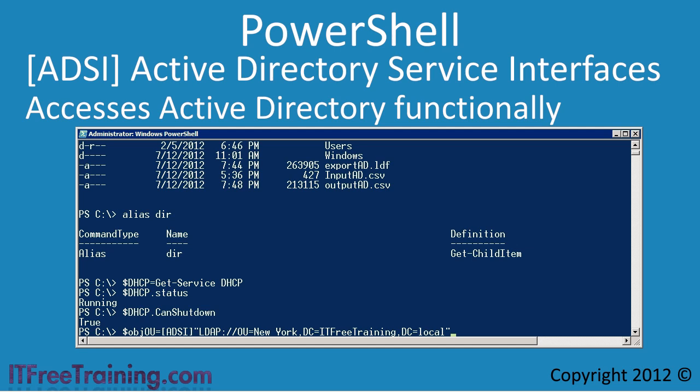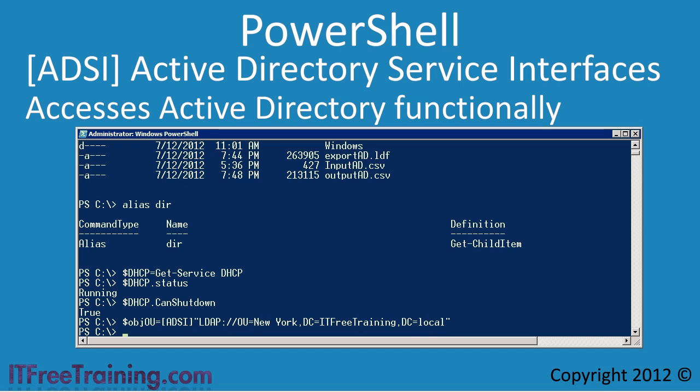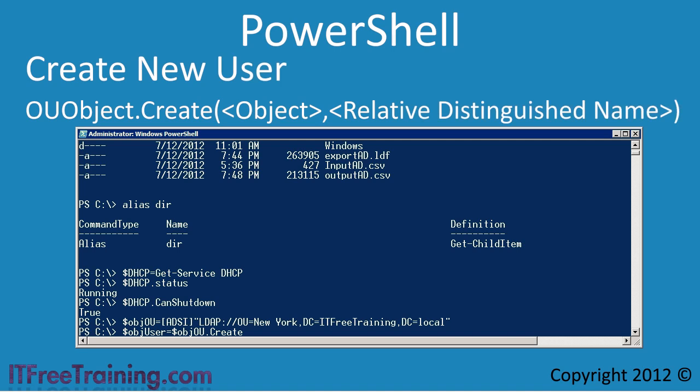I now have a variable $objOU that contains the object for the New York organizational unit. The next step is to create a new user under that organizational unit. I will store the new user in a variable called $objUser by running the create function on the New York OU object, using $objOU.Create. The first parameter is the object type — in this case a user — and the next parameter is the username, which will be Charlie Wilson.